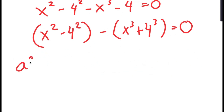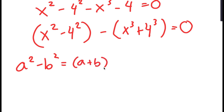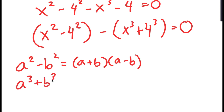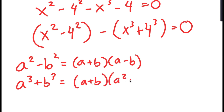Now, if I have something in the form a squared minus b squared, this is equal to a plus b times a minus b. And if I have something in the form a cubed plus b cubed, this is equal to a plus b times a squared minus ab plus b squared.